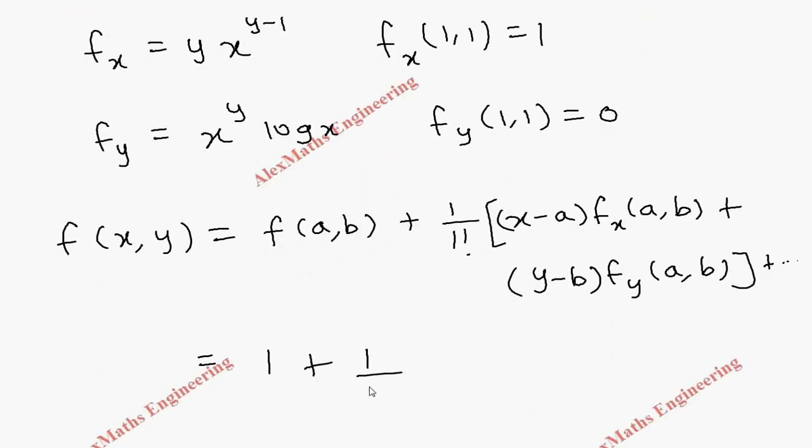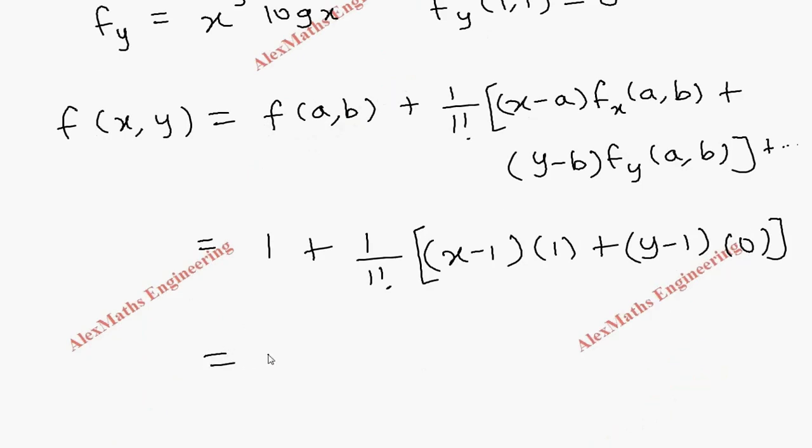Then 1 by 1 factorial, the factor is (x-1) into fx is 1, plus another factor is (y-1) and fy is 0. So totally we are left with 1 plus (x-1) plus dot dot dot.